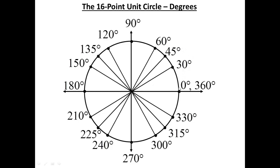As long as you know the first two steps are 30 and 45, you can get the rest by counting. Starting at 30 and adding 30 each time: 30, 60, 90, 120, 150, 180, 210, 240, 270, 300, 330, 360. Starting at 45 and adding 45: 45, 90, 135, 180, 225, 270, 315, 360. So here we have our 16-point unit circle in degrees.